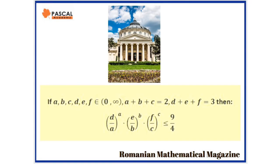In this video, we are going to prove: if a, b, c, d, e, and f are positive real numbers, a plus b plus c equals 2, and d plus e plus f equals 3, then (d/a)^a times (e/b)^b times (f/c)^c is smaller or equal than 9 over 4.